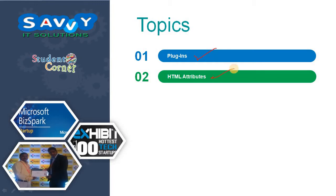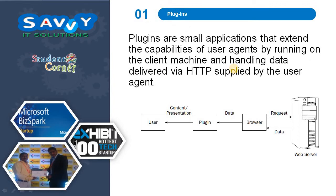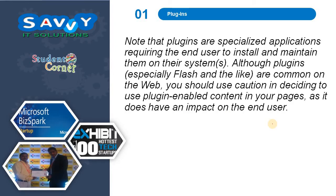Common attributes are used in each and every HTML tag. Plugins are small applications that extend the capabilities of user agents by running on the client machine and handling data delivered via HTTP supplied by the user agent. The browser requests the engine and data is supplied from the web server.